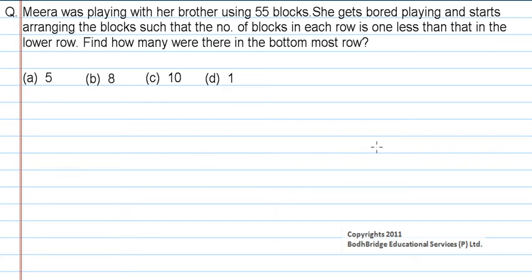Meera was playing with her brother using 55 blocks. She gets bored and starts arranging the blocks such that the number of blocks in each row is 1 less than that in the lower row. Find how many blocks are in the bottom most row. The options are 5, 8, 10, and 1.